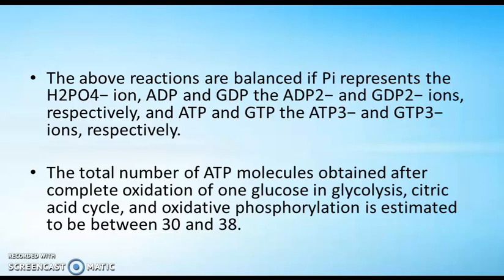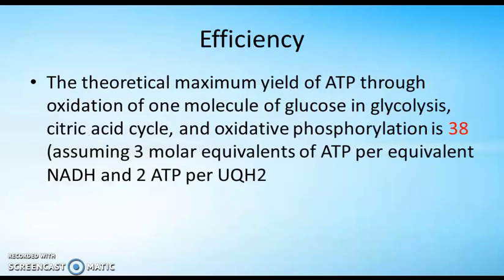The total yield of ATP molecules obtained after complete oxidation of one glucose in glycolysis, citric acid cycle, and oxidative phosphorylation is estimated to be between 30 and 38. The theoretical maximum yield through oxidation of one molecule of glucose is 38, assuming 3 molar equivalents of ATP per NADH and 2 ATP per UQH2 (that is, FADH2).